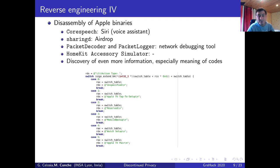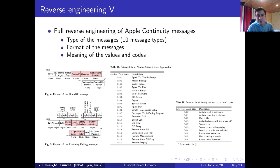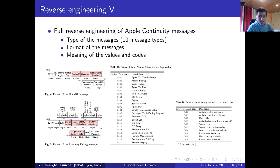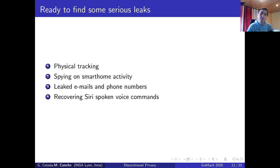Thanks to those three approaches, we managed to get a pretty good view and basically understood everything — all the language of Apple continuity. We had a total of 10 message types. For each message we have the format — the different fields composing the message — and also for each field the meaning of the codes. A lot of information is listed and available inside our paper. Now we understand fully the language of Apple devices and we are ready to start investigating for potential privacy and security issues. We discovered many things, but in this presentation I'm just going to talk about four of them: physical tracking, spying on smart home activity, how some emails and phone numbers are leaked, and the case of Siri spoken commands.